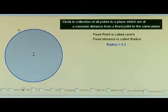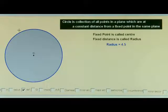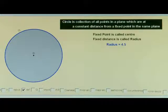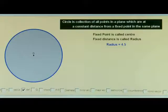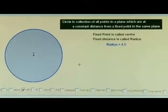Dear learners, let us learn some more concepts related with the circle. You are very much familiar that the circle is the collection of all points in a plane which are at a constant distance from a fixed point in the same plane. This fixed point is the center of the circle. This colored portion is known as the interior of the circle. The outside is the exterior of the circle, and the boundary is known as on the circle.